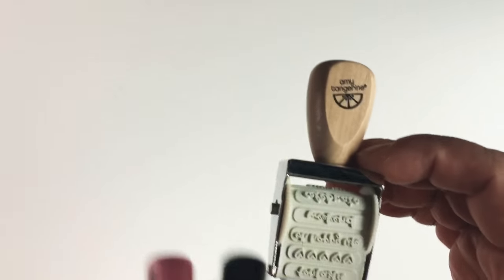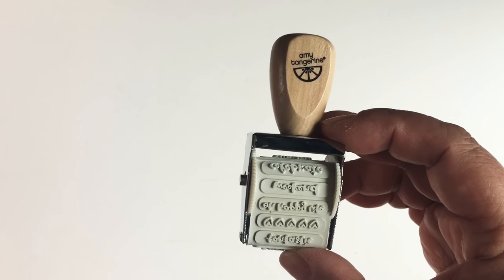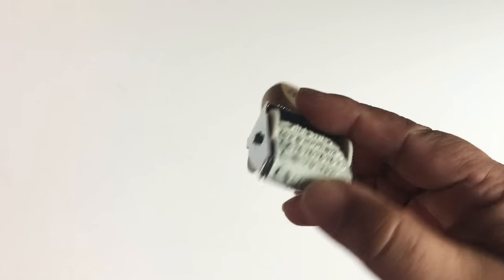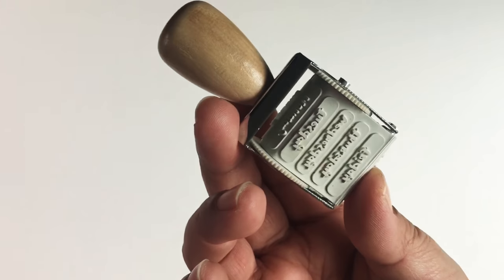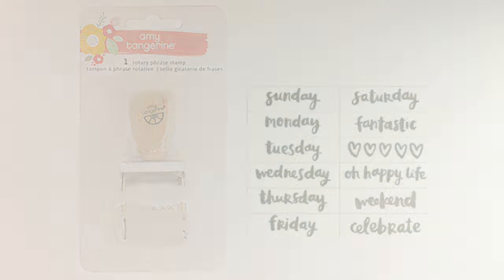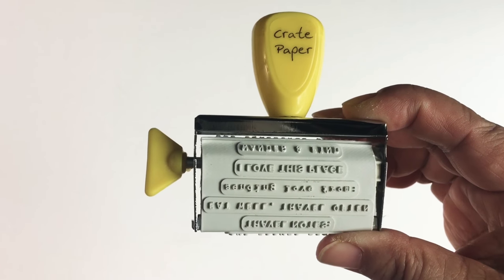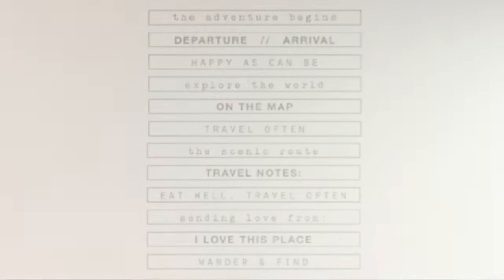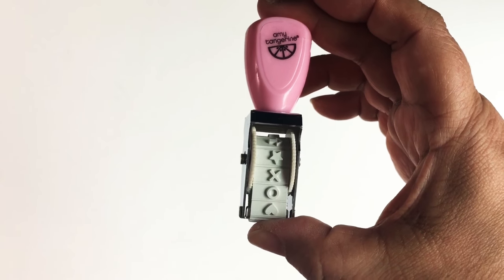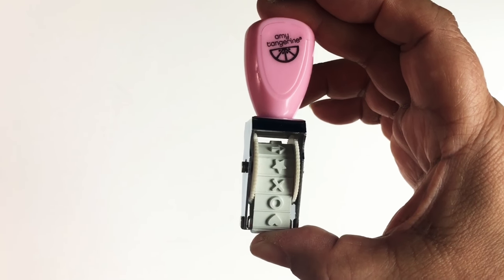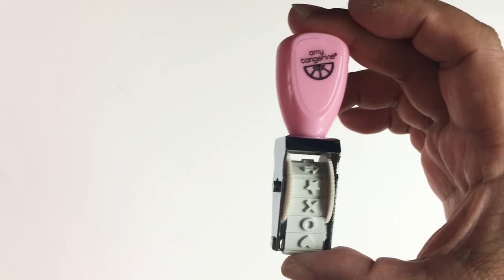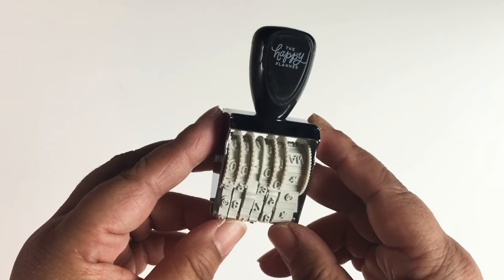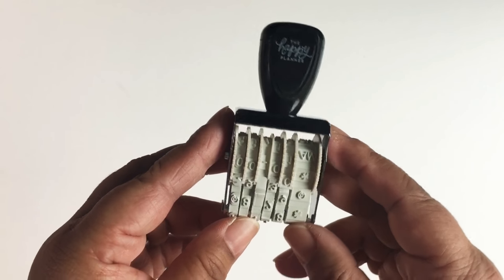Roller stamps. This one here is from Amy Tangerine and this is from her Oh Happy Life collection. This one has the days of the week, so it's perfect. This is from Crate Paper in their collection. Another Amy Tangerine stamp, this is her Icons one from the Sunshine and Good Times collection. I always have a date stamp. This one here is from Mambi or the Happy Planner, and this actually stamps both the date and time.